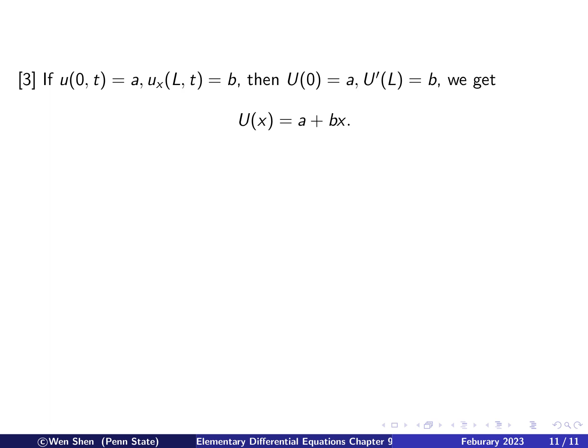Here's our last example. Let's put in some numbers there. So u at zero is A. And let's put a number, u_x at L is B. So this is translated into conditions on the steady states. Capital U at zero is A. And capital U prime at L is B.